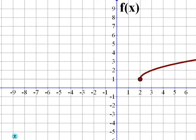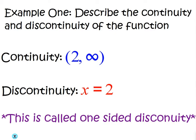So notice for this example, as long as we go past this point, there will be no break in that curve. It's going to go on forever like that. So where we're going to write that is, it's going to be continuous from two to infinity.